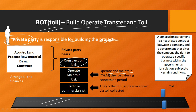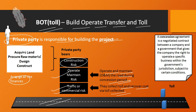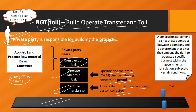Not only that, the private party operates and maintains the road during the concession period, meaning they bear the operation and maintenance risk as well. They collect the toll and recover costs through toll collected. If traffic does not materialize as per their projections, they won't be able to recover their investments — meaning they also bear the traffic or commercial risk. The private party has to arrange all finances, and the government awards the contract to the party willing to share maximum toll revenue. So clearly, the private party bears the maximum risk in BOT-TOL.